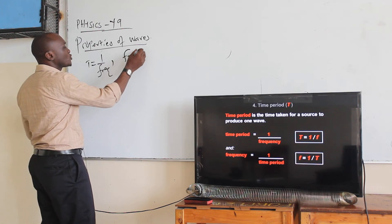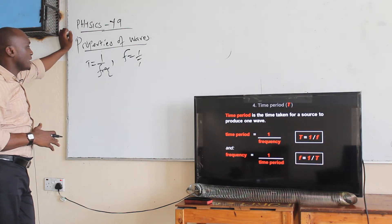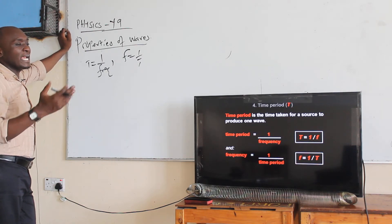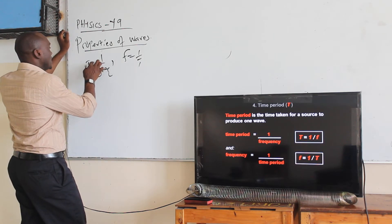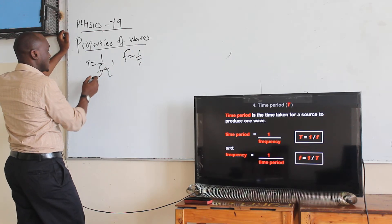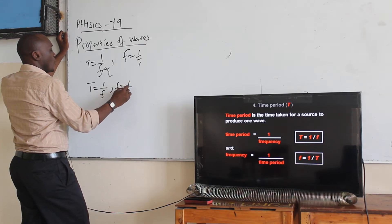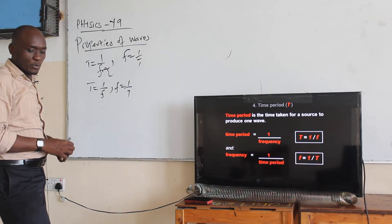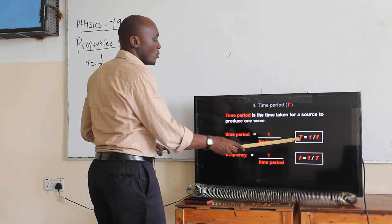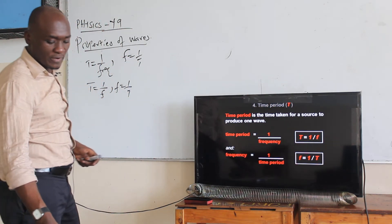Frequency is the number of waves per second. That's why period and frequency are related — they are reciprocals of each other. T is equal to one over frequency, and F is equal to one over T. So we can write T equals one over F, and F equals one over T.